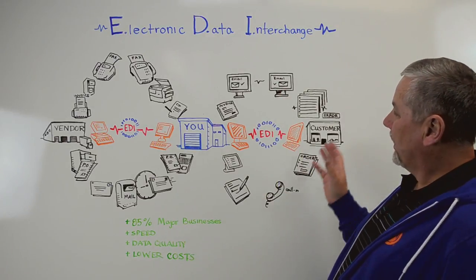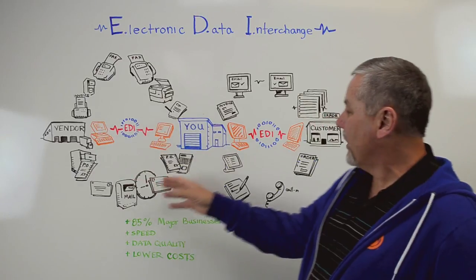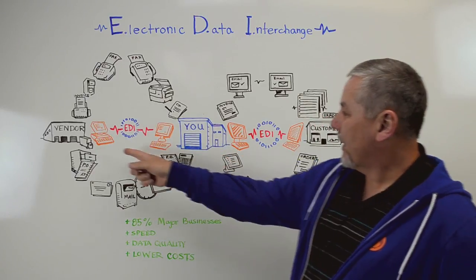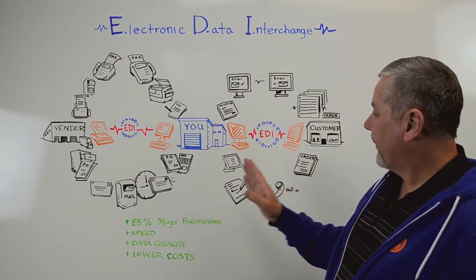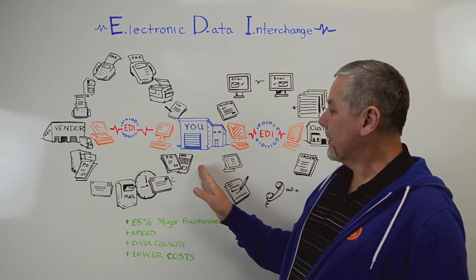As you look at this graphic here, the things that are in black are manual processes, and we've got our EDI in orange and the blue and red here. Let's talk about this from the perspective of your business right here.